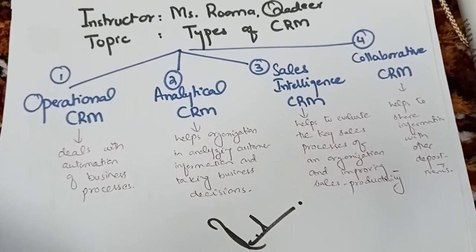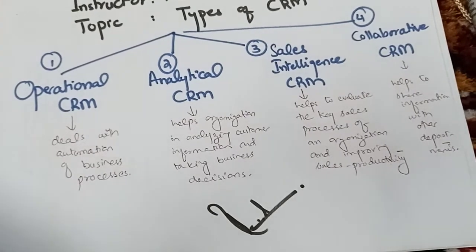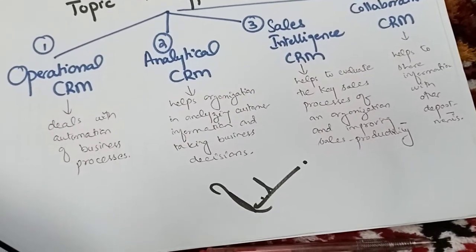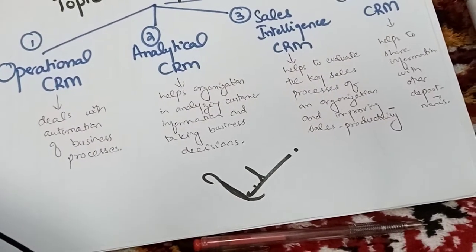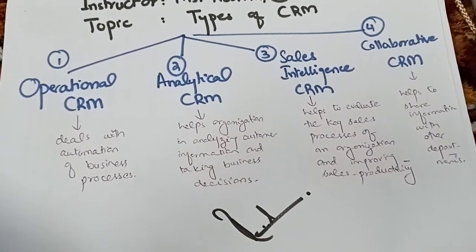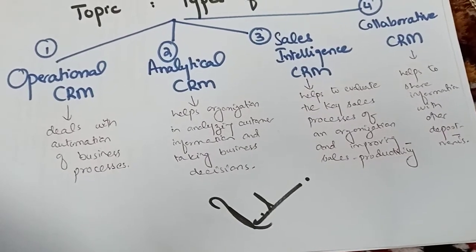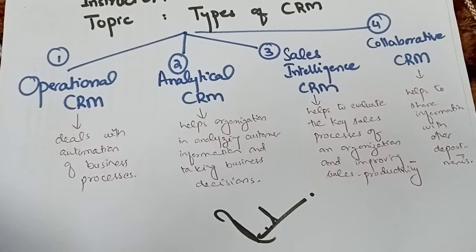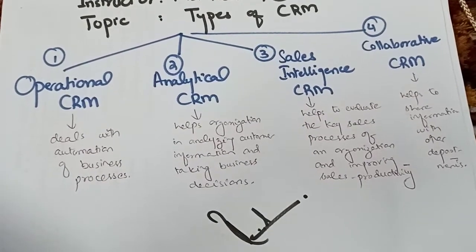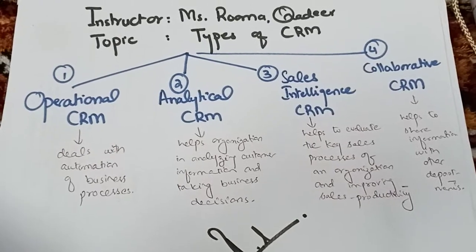First, let's talk about operational CRM. Operational CRM is helpful for the department working on production of goods. This department belongs to the frontline employees, so the more we understand the needs, requirements, and technical understanding of the frontline employees who are working on the final production, the more it would be helpful for the organization to develop a good product. Operational CRM deals with the automation of business processes.